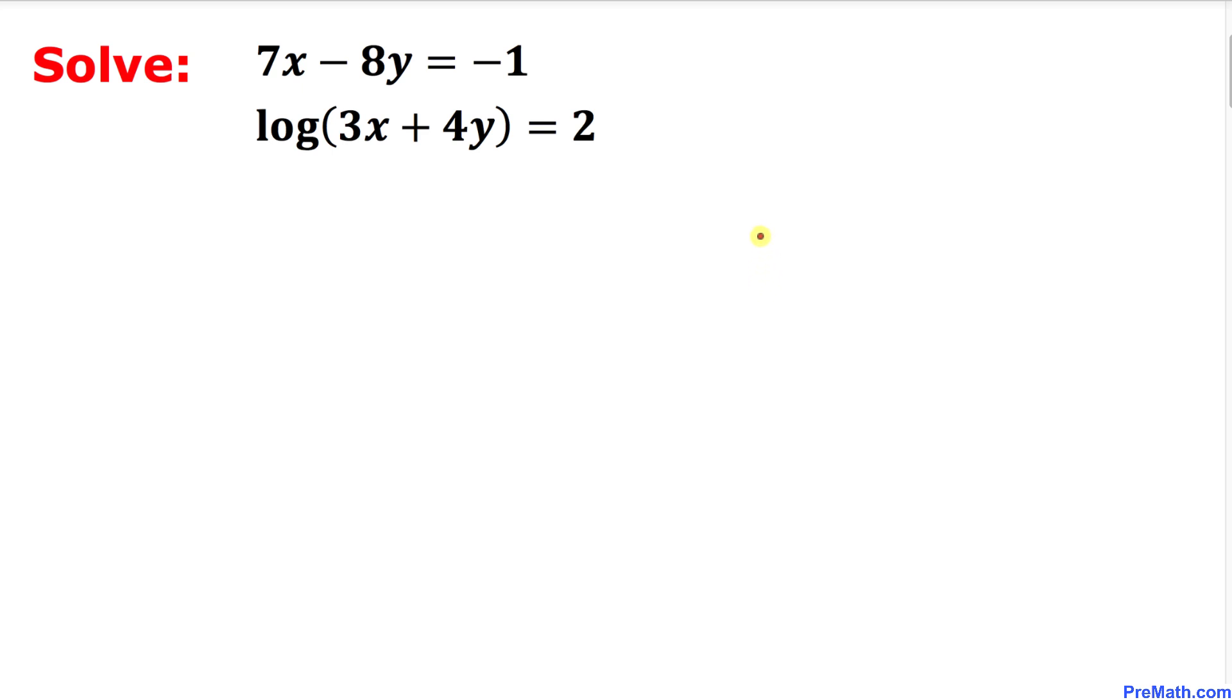Welcome to pre-math. In this video tutorial, we have a system of two equations with two variables. We are going to solve for x and y. Here's our first equation: 7x minus 8y equals negative 1, and our second equation is log of 3x plus 4y equals 2.